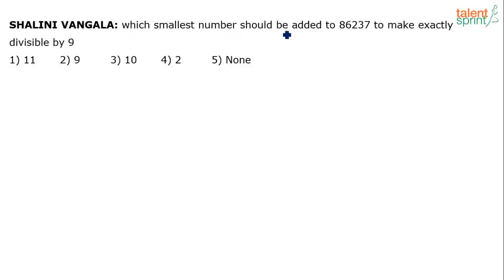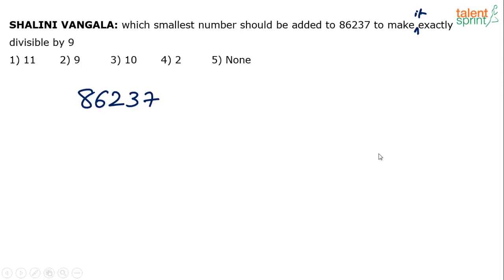Which smallest number should be added to 86237 to make it exactly divisible by 9? So the given number is 86237, and we're looking at what number has to be added to make it exactly divisible by 9. Now, divisibility by 9 is a very easy verification — it takes like 3 to 4 seconds to verify whether a number is divisible by 9 or not.